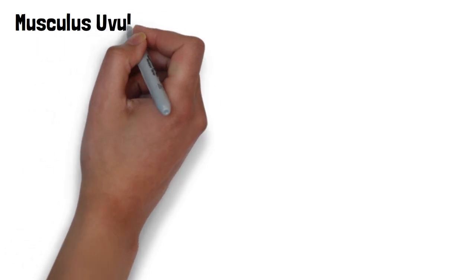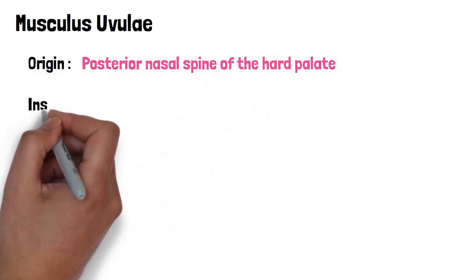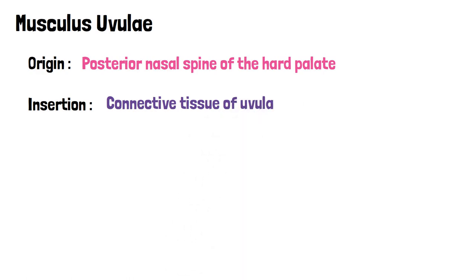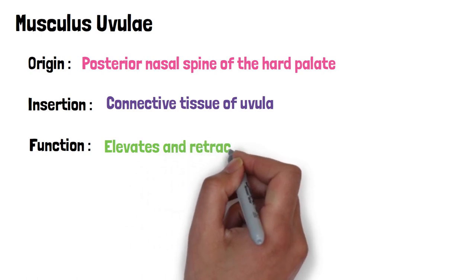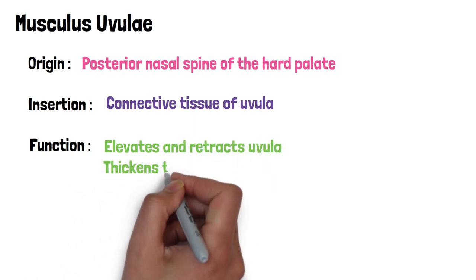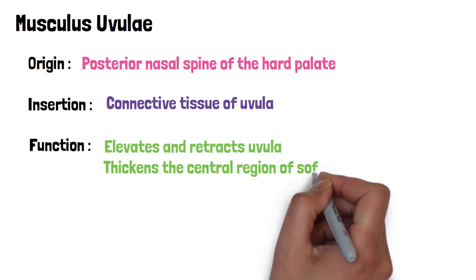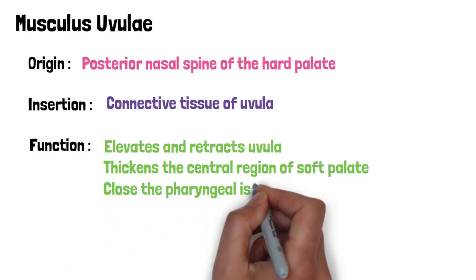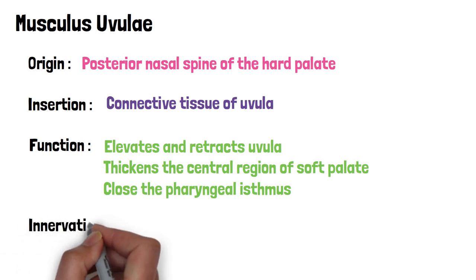Finally, the musculus uvulae originates from the posterior nasal spine of the hard palate and inserts into the connective tissue of the uvula. Since it is associated with the uvula, it elevates and retracts the uvula. Along with that, it also thickens the central region of the soft palate and helps the levator veli palatini muscles to close the pharyngeal isthmus between the nasopharynx and the oropharynx.